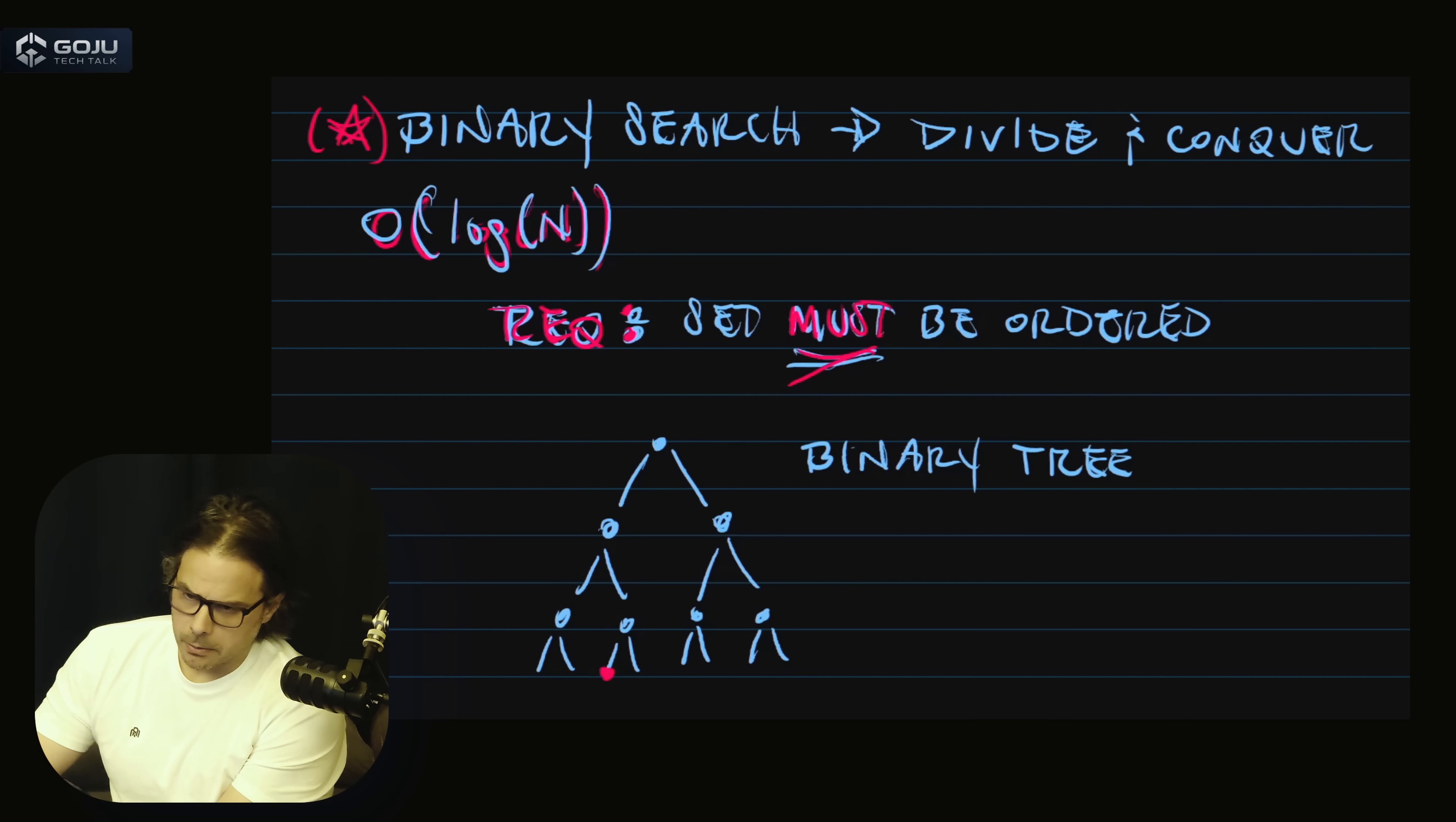So at the very top, this is our root node, what's known as the root node, and then at the very bottom, those are all the leaf nodes. Essentially, you think of it like a tree, and so the top part is the root, the base, and then as you grow it out, when you get to the terminal edges, the terminal nodes, those are known as leafs.